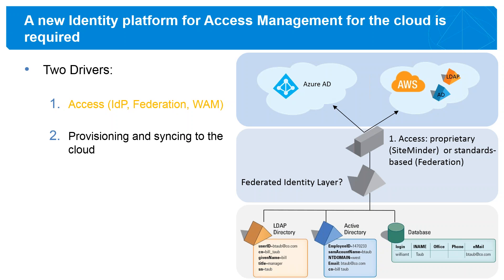So federation was created — using a federated fabric, an identity provider, and a service provider relationship — so you can set up a trust between cloud applications and on-premise sources of identity. Not a traditional AD domain trust, but simply: if you send me a user from your environment, I already trust you, so I'm going to trust that user is who you say they are and give them authorization to access resources.